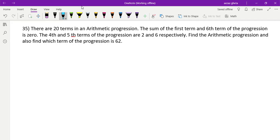This problem is for 3 marks. Let us start the solution. Let us read the question properly. There are 20 terms in an arithmetic progression. The sum of the 1st term and 6th term of the progression is 0.